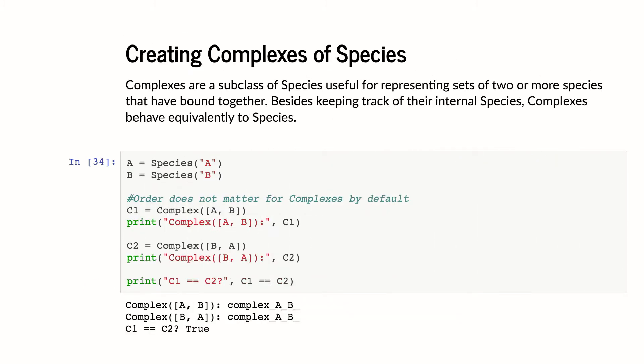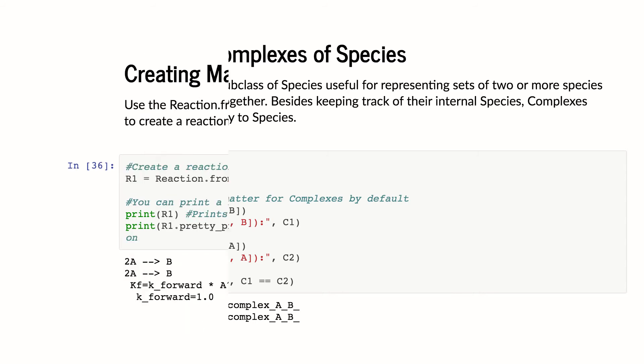There's also complexes. These are for using bound species. It's a different type of species. It does some automatic naming for you. They're worth reading about, but I'm not going to go into them. So if you look at this notebook, you can read about this on your own.